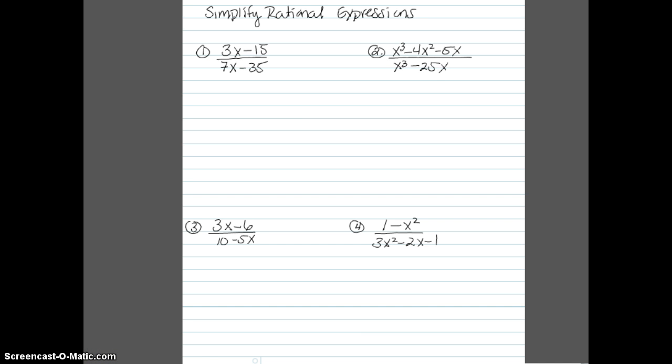Alright, let's take a look at number one. We have the expression 3x - 15 over 7x - 35. And in the numerator, we're going to factor out a GCF of 3. And in the denominator, we'll factor out a GCF of 7. Now when we do that, we see that we have a common factor of x - 5 in the numerator and denominator. And when we cancel those out, we're left with 3 over 7. So this expression is equivalent to the original rational expression.